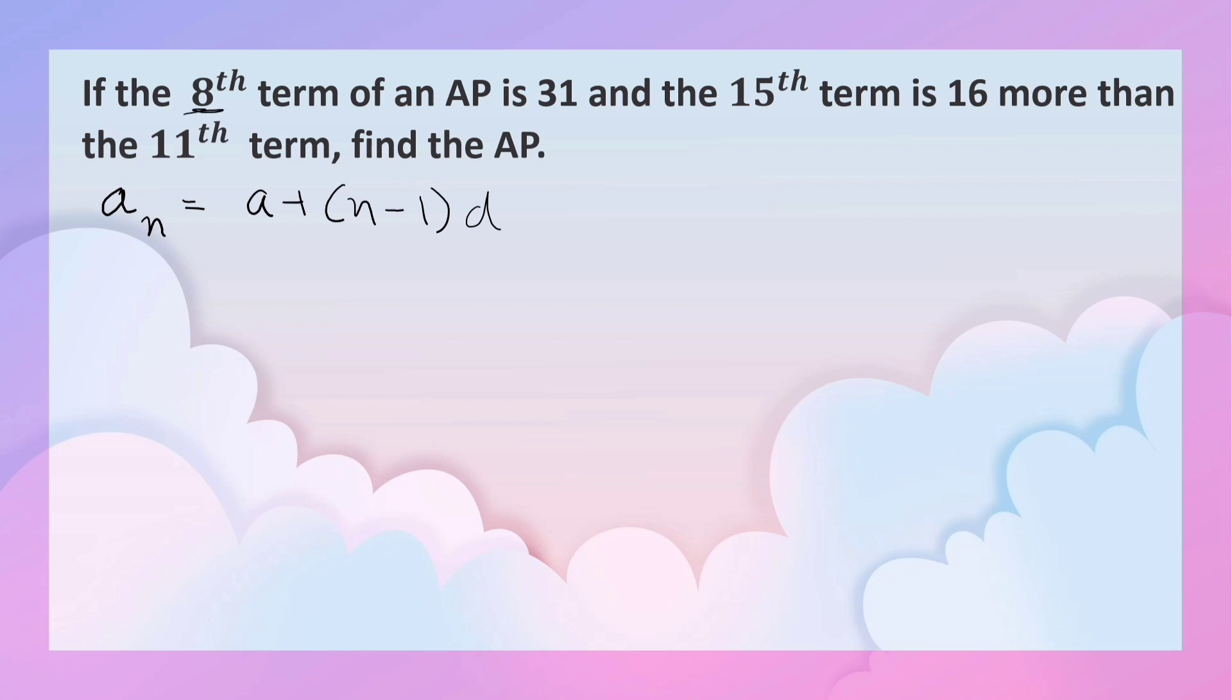Now we can write a_8, the 8th term. We don't know the first term. a_n is 8, so a plus 8 minus 1, which is 7d, equals 31.